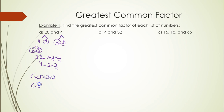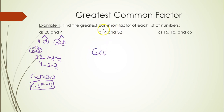The GCF is 4. Notice the easy approach: out of 28 and 4, since 4 is the smaller number and 28 is divisible by 4, the GCF is 4. For part b, with 4 and 32, 4 is the smaller number and 32 is divisible by 4, so 4 is the GCF.